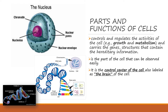The first part is the nucleus. The nucleus has parts: chromatin, nucleolus, nuclear pores, and nuclear envelope. The nucleus serves to control and regulate the activities of the cell, such as growth and metabolism. It carries the genes, structures that contain the hereditary information. The nucleus is a part of the cell that can be observed easily, and it serves as the control center of the cell — also labeled as the brain of the cell.